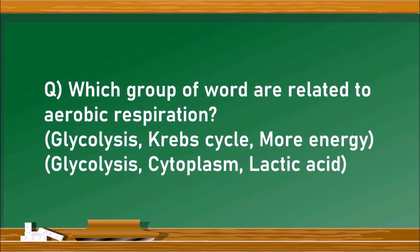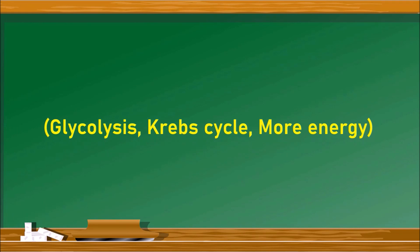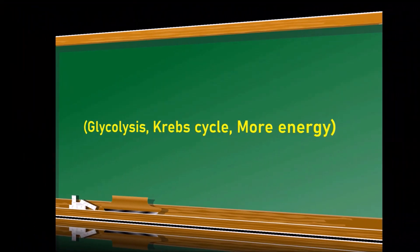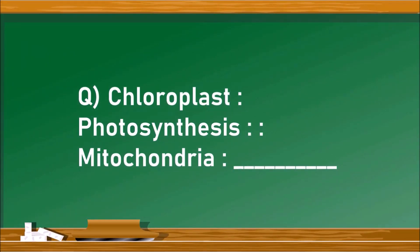Which group of words is related to aerobic respiration? Group one: glycolysis, Krebs cycle, and more energy. Group two: glycolysis, cytoplasm, and lactic acid. In aerobic respiration, glycolysis and the Krebs cycle occur and more energy is released, so group one is related to aerobic respiration.